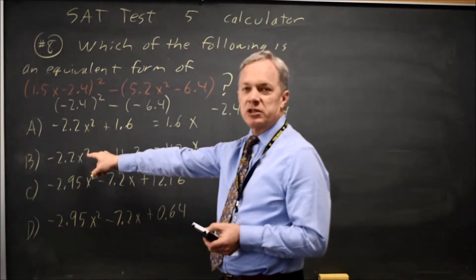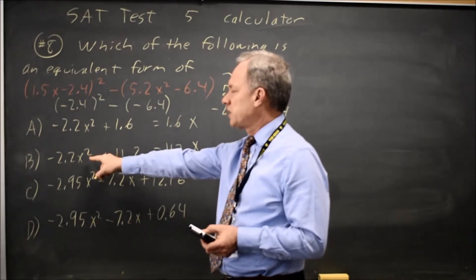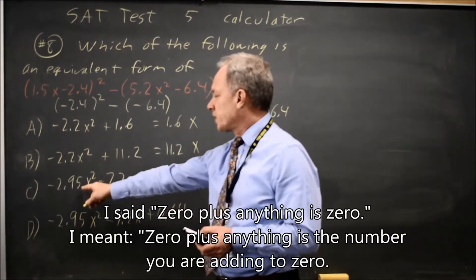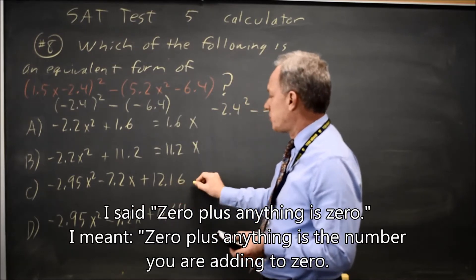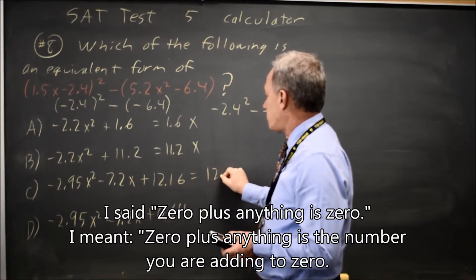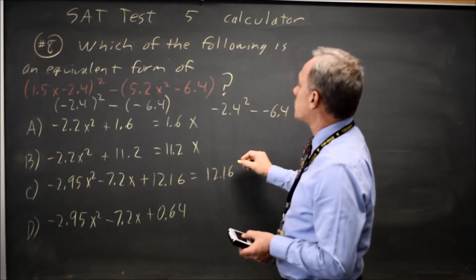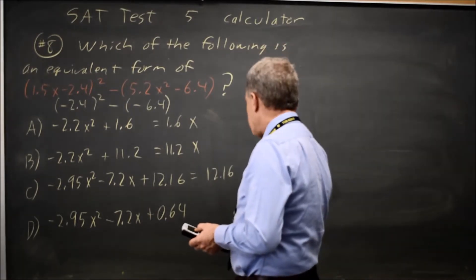I'm very good at substituting in 0 because 0 times anything is 0, and then 0 plus anything is 0. This would be 0 plus 0 plus 12.16 is 12.16, which is what I got when I typed it in correctly.